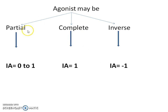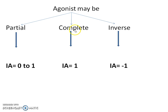An agonist may be partial, complete, or inverse. A partial agonist will bind to a receptor but does not show complete pharmacological activity; therefore its IA value — that is, intrinsic activity to affinity value — is 0 to 1. A complete agonist will bind to a receptor and shows complete pharmacological activity; therefore the IA value is equal to 1.